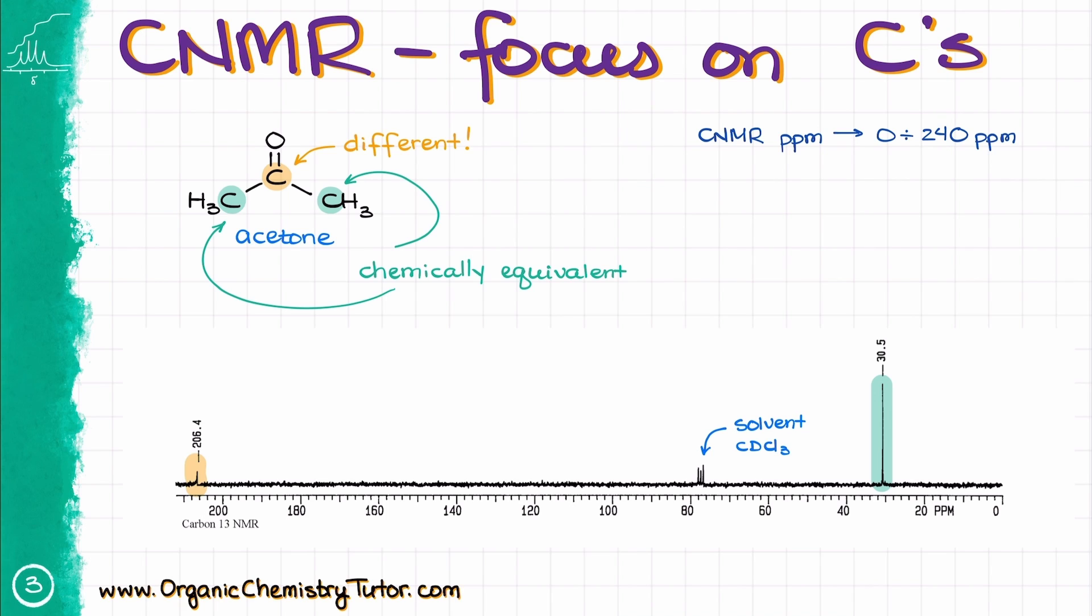For the carbon NMR, we typically see signals from 0 to about 240 ppm, while for the hydrogen NMR, we typically see signals from 0 to about 14. Most instructors will label which spectrum is which on the exam, but on the off chance that they are not labeled, you can easily deduce it by just looking at the numbers on the x-axis.